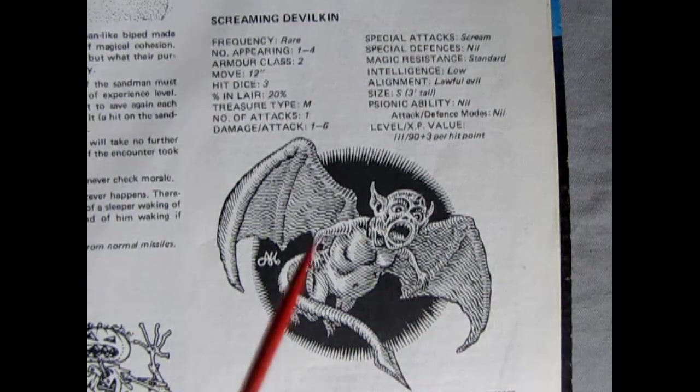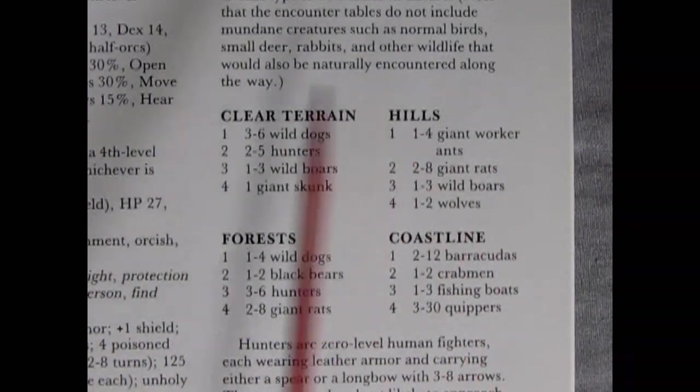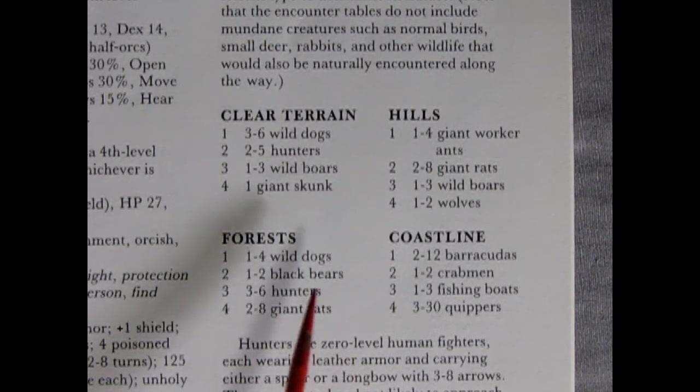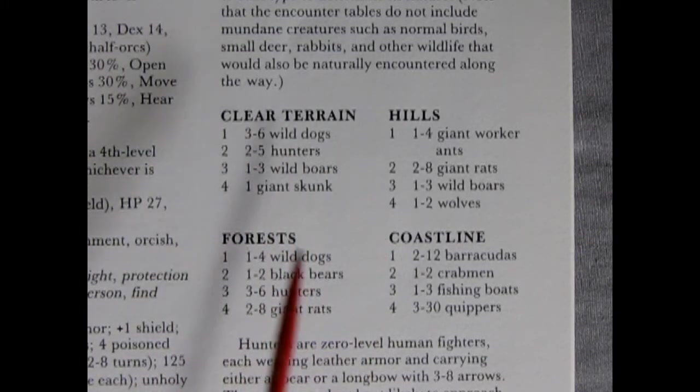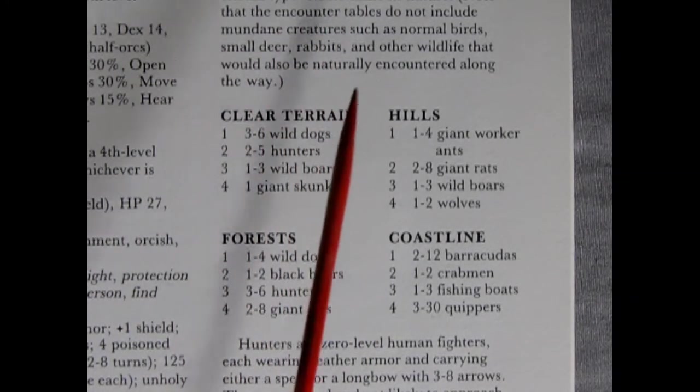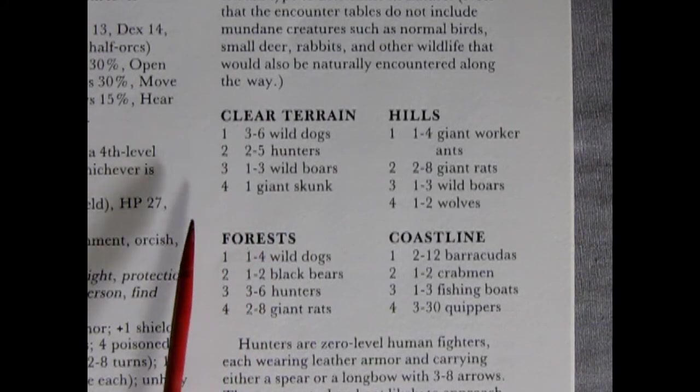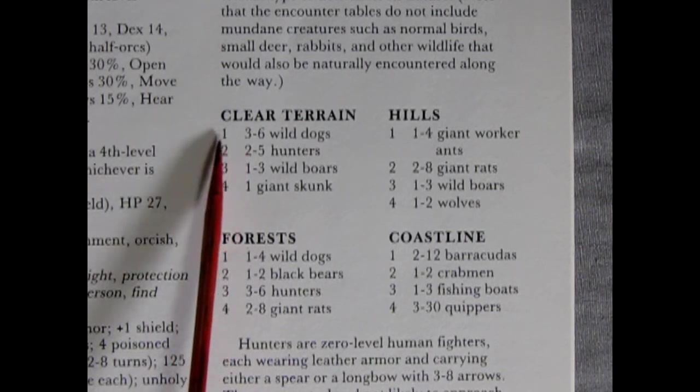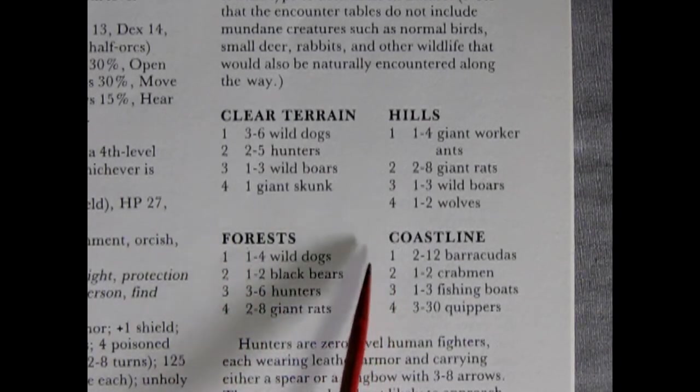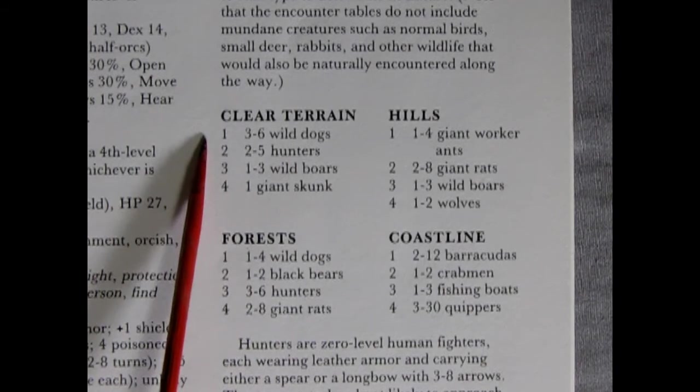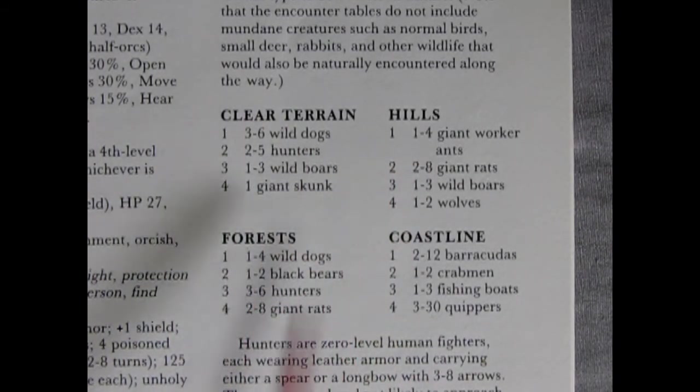Now I'm going to show you some other little bits here. So here we have a chart from the first place award-winning module, Citadel by the Sea, from the Dragon Magazine, October 1983, issue number 78. This table is in reference to the random encounter creatures you're going to meet, because at some point you have to go from the town to the Citadel, and there's four ways to go. One is on clear terrain, the other is through the hills, the third is through the forests, and the fourth is along the coastline.